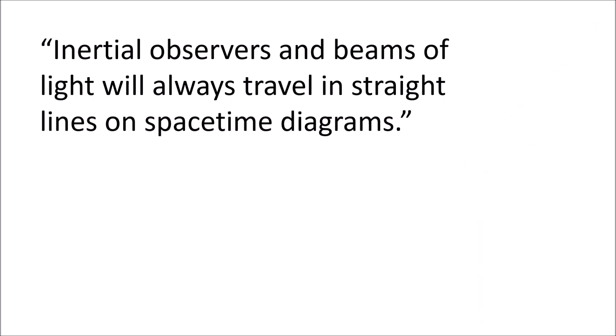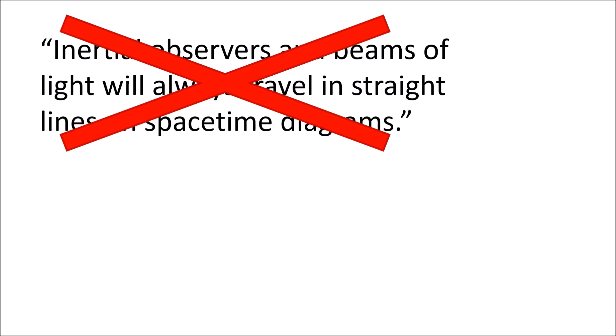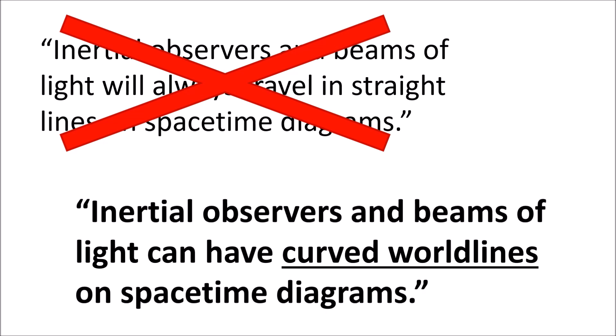You might be tempted to say that inertial observers and beams of light will always travel in straight lines on a spacetime diagram. However, this statement is not true. In fact, inertial observers and beams of light can have curved world lines in spacetime diagrams.